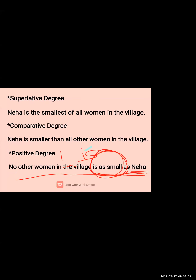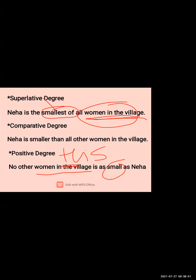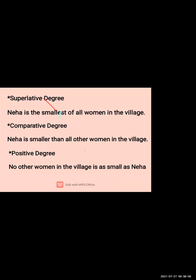Again, to explain: first add the new words — 'no other' — which are not part of the original superlative sentence. We add these few words because we are converting into a positive degree. Then the rest part of the sentence: 'woman in the village'. Here we write 'in this village'. Then the adjective form — 'smallest' is superlative, so we write the positive form: 'is as small as Neha'. This is the formula to convert superlative into a positive degree.